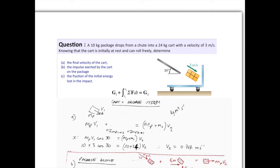So g1 is the sum of the momentum of the package in the cart before the collision, and g2 is the momentum of the package in the cart after the collision. The momentum due to the cart is 0 because the cart is initially at rest, and the combined momentum of both objects after the collision is represented here.